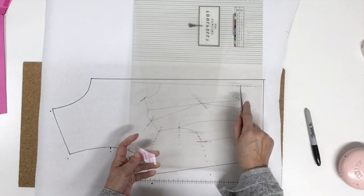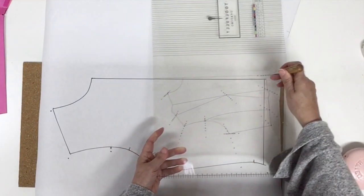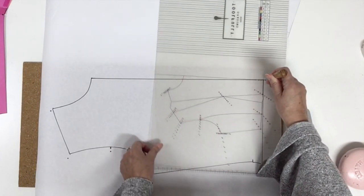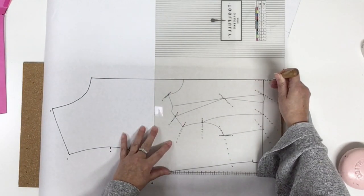One last point to grade at the center front. You're going to use the black and place it right over the trace line on the paper, align your center front, and just dot the gray.